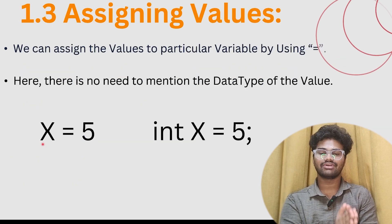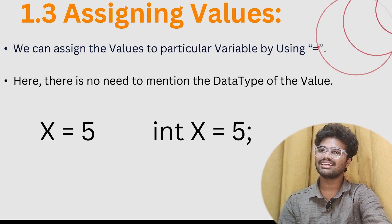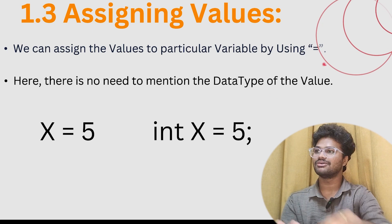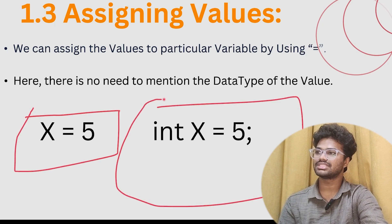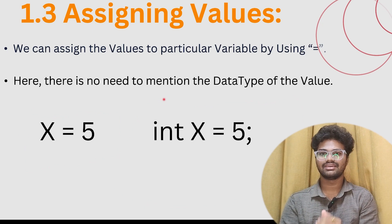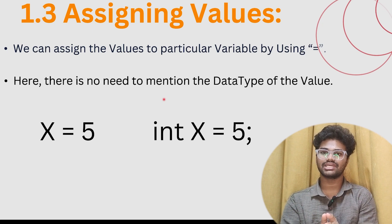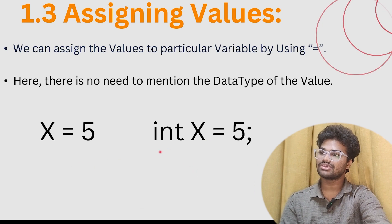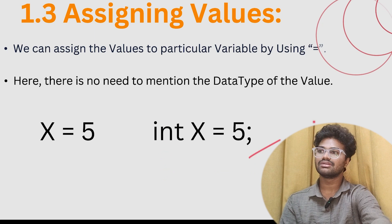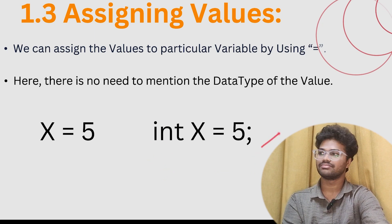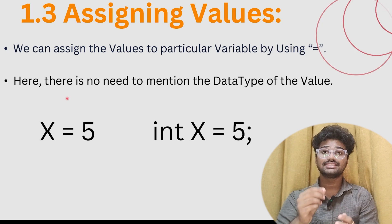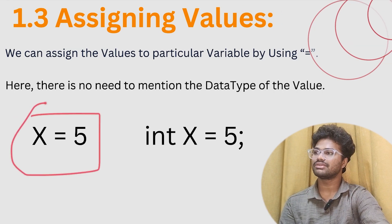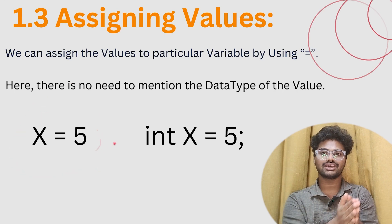How do we assign values? We store the values in a particular variable. For example, x equal to 5. In C programming, you would write int x equal to 5, declaring the data type explicitly. But in Python, we simply write x equal to 5 — Python automatically identifies the data type, which makes it easy to assign values.